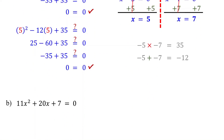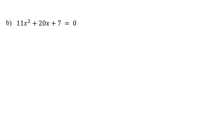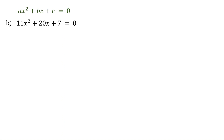For instance, in the next example, it is difficult to find two numbers that multiply to give the product of 11 and 7, and add up to 20. Although it is hard to factor, we can easily solve it using the quadratic formula. Since it is in standard form, our first step is to identify the values of the coefficients: a is 11, b is 20, and c is 7.